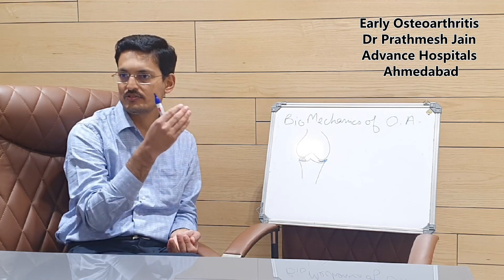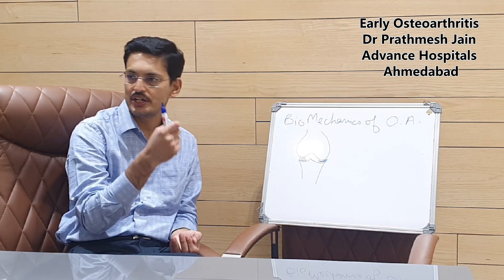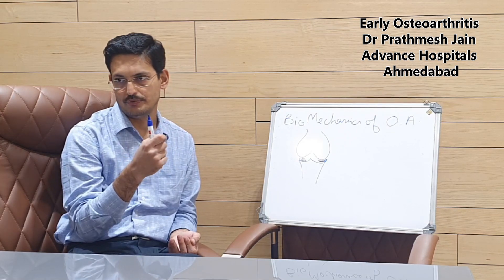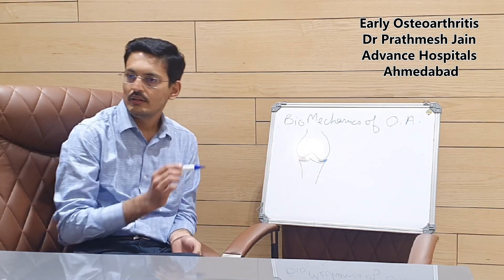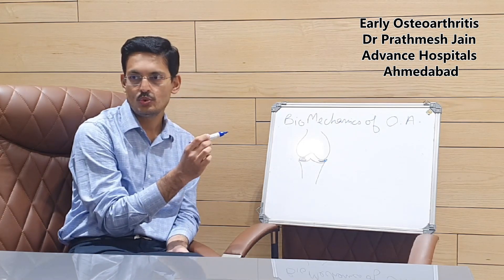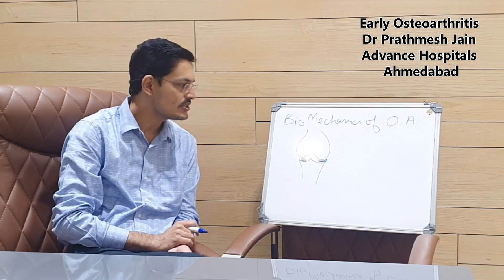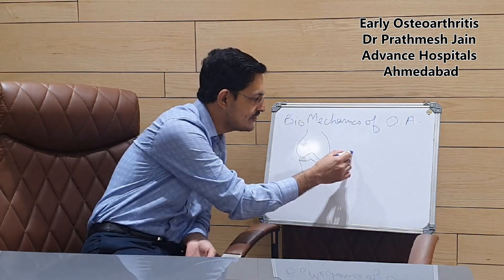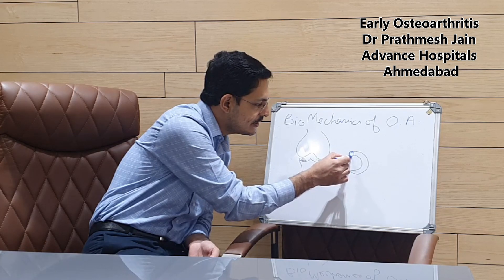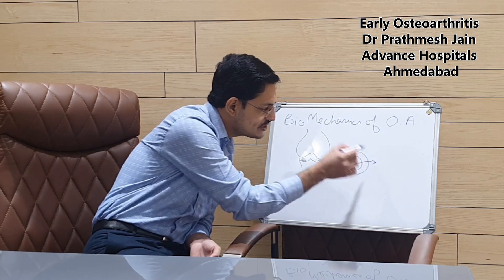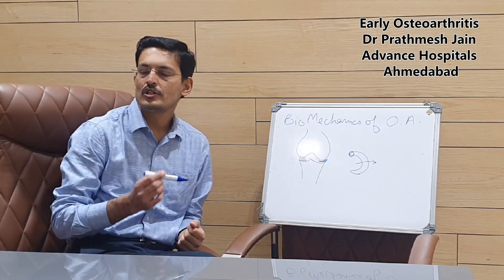Varus osteoarthritis on the medial side is usually initiated by a meniscal injury, or some patients may have a varus deformity. If there is a meniscus tear, this varus deformity may progress. You can have a simple vertical tear or a horizontal tear leading to a dysfunctional meniscus causing osteoarthritis. Sometimes you will have a root tear — the meniscus can tear from its root portion, causing it to shift medially. This is called meniscus extrusion, a phenomenon that was not previously understood.